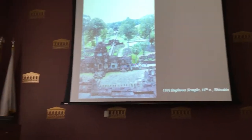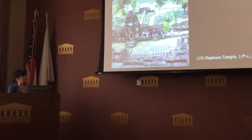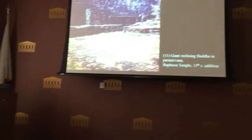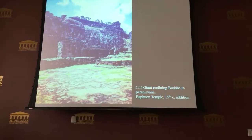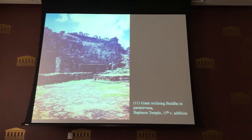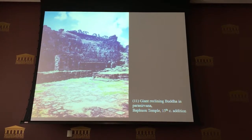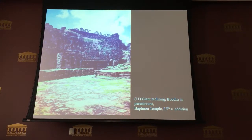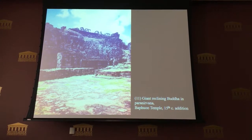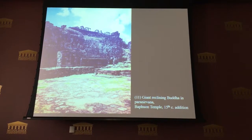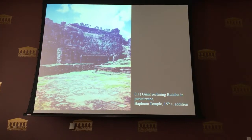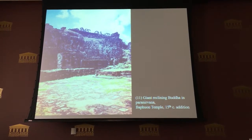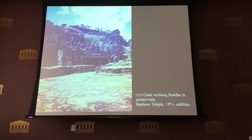But then later in the 15th century, the temple was converted, and there's a giant reclining Buddha in parinirvana on the back. This is another really common example of Buddhist iconography — it indicates when the Buddha died at the end of his life and actually entered into nirvana. It's beautiful, though a little hard to see; it's so large it's hard to even have a camera capture it.